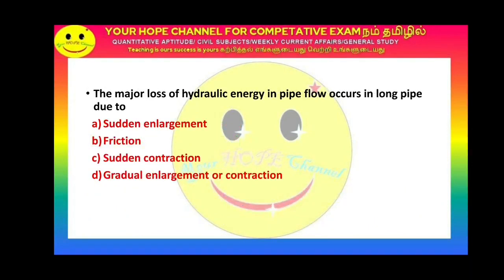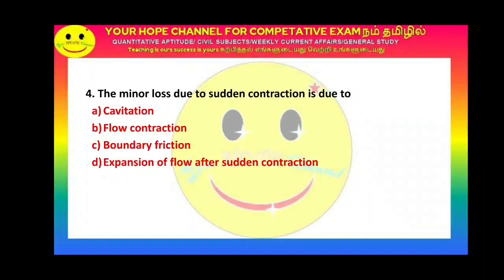Next question: The major loss of hydraulic energy in pipe flow occurs in a long pipe due to what? The answer is option B: friction. In pipe flow, the major head loss is the frictional loss.